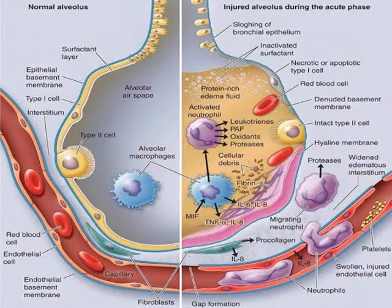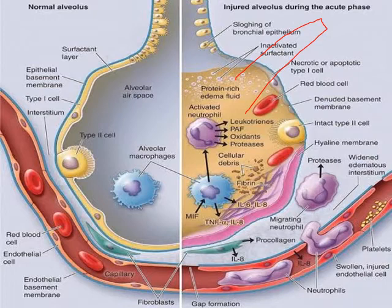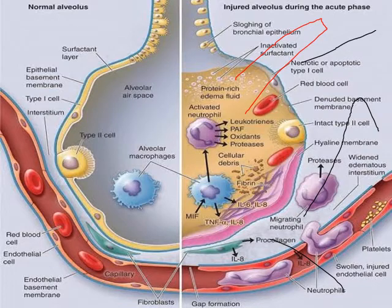In this image you can see the alveolar capillary membrane. Here you can see protein-rich fluid inside the alveoli and fluid in the interstitium — this is the fluid-filled alveoli. This fluid-filled alveoli and edematous interstitium result in increased thickness of the alveolar capillary membrane, which leads to poor gas exchange across the membrane.